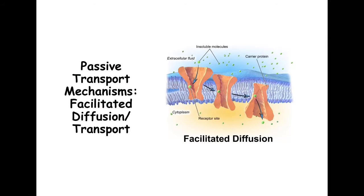Now let's look at another passive transport mechanism. We know from the cell membrane proteins video that some proteins serve as carrier proteins that help bring molecules across the membrane. Some molecules may not be able to go freely on their own, so this mechanism of transporting molecules across the membrane — still following a gradient — is called facilitated diffusion or facilitated transport.